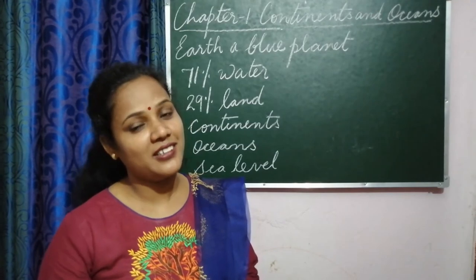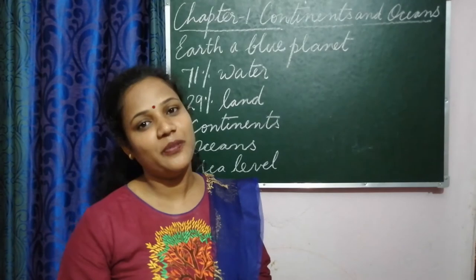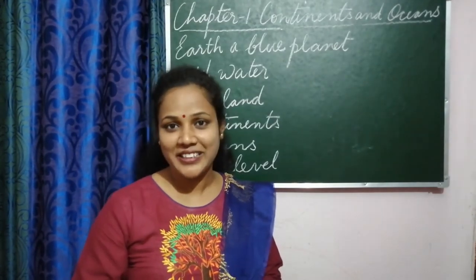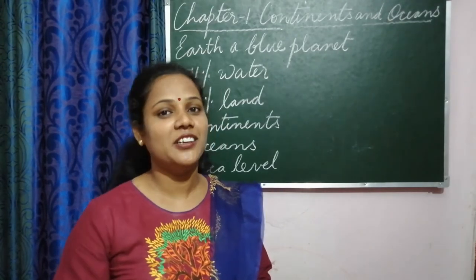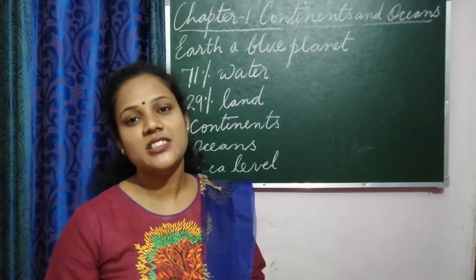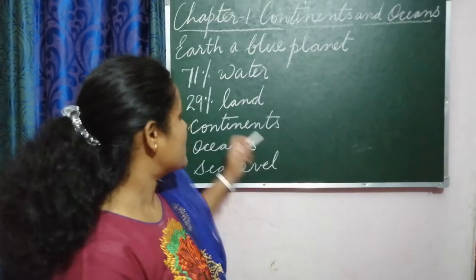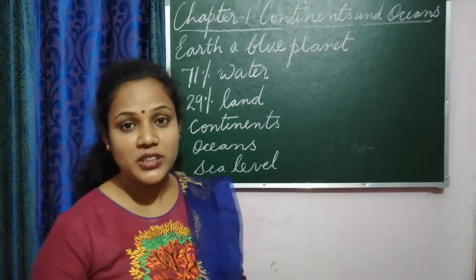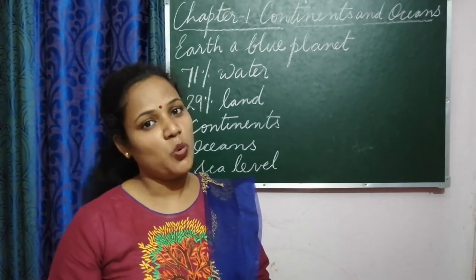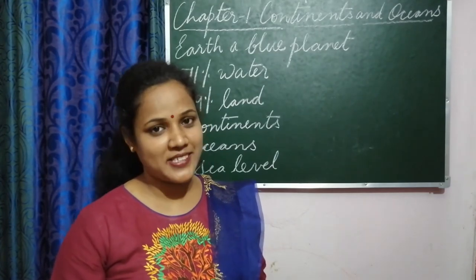Earth is called a blue planet. It looks blue in color when you see it from space. Do you know why it looks blue in color? It looks blue because of the presence of water. Our earth is covered with at least 71 percent water. That's why it looks blue in color from space.